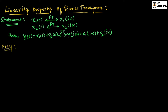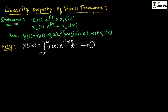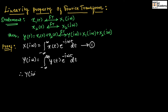Now let us see the proof. We know X of j omega is equal to the integration from minus infinity to infinity of x of t, exponential to the power of minus j omega t, dt. Let us take this as equation number 1. Using equation number 1, let us write Y of j omega is equal to the integration from minus infinity to infinity of y of t, exponential to the power of minus j omega t, dt. In place of y of t, let us substitute x1 of t plus x2 of t.